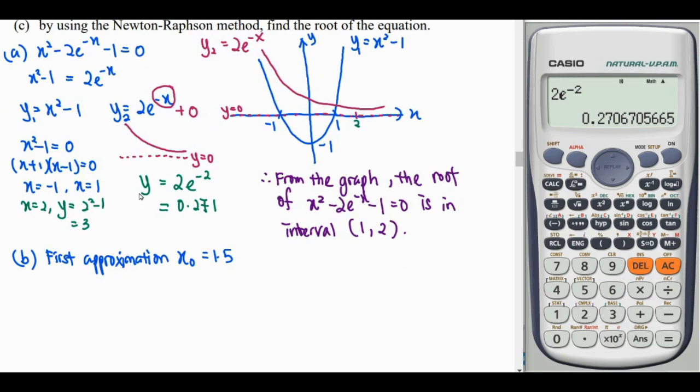So for question C, in order to use Newton-Raphson method, we need our function which equals 0. So our function here is x² - 2e^(-x) - 1. Then we're going to differentiate this function. So x² differentiate, we get 2x. For exponential,